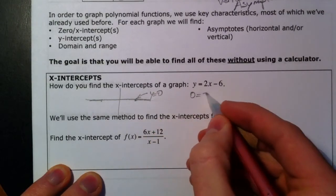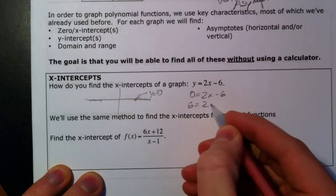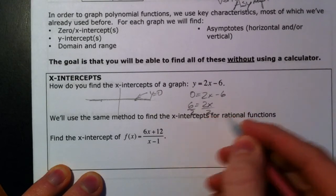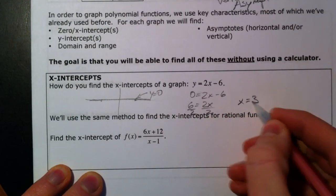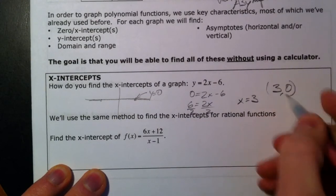And then solve it. So if we add 6 over, we get 6 equals 2x. We divide by 2 and we get x equals 3. And so 3, 0 is our x-intercept.